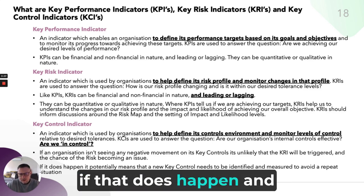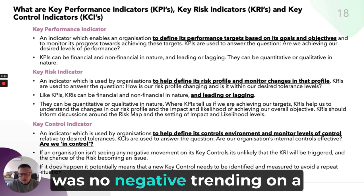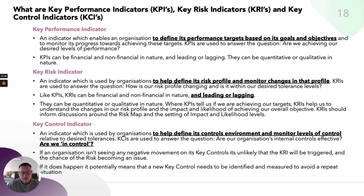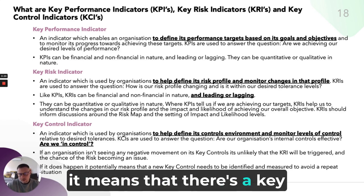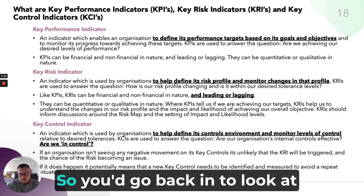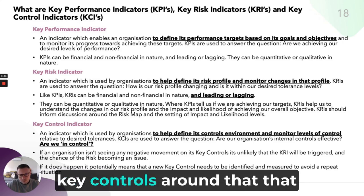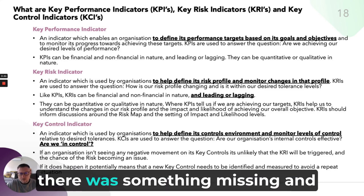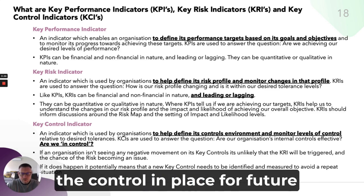If a risk event does happen and nothing was triggered — no negative trending on a Key Control Indicator — then there's a process to go through to identify it. It potentially means there's a Key Control Indicator that was missing which would have informed that risk. You go back to look at how that risk profile is made up, examine the control environment around it, and you'll likely find something was missing. You can learn from that event and put the control in place so it doesn't happen again.